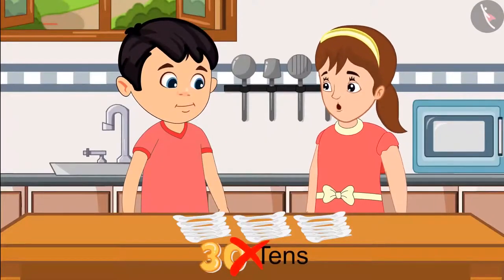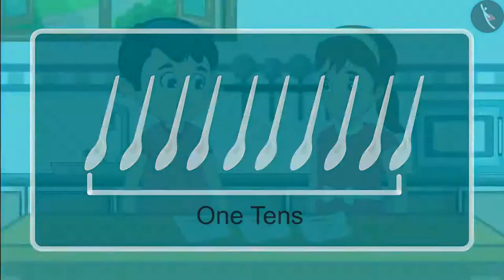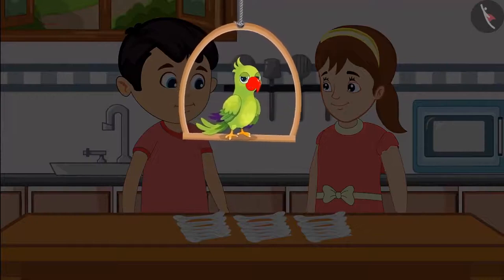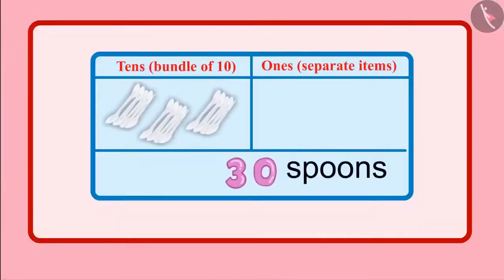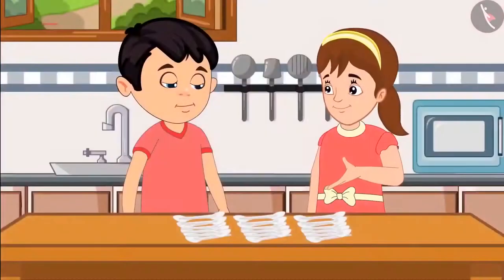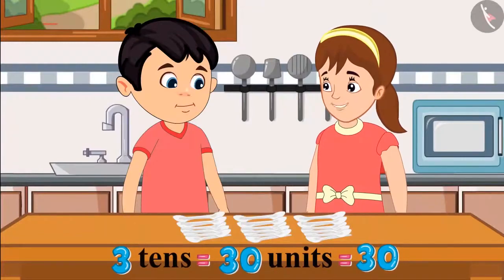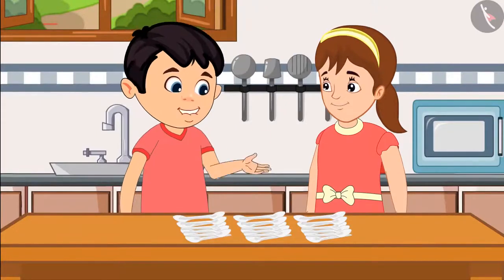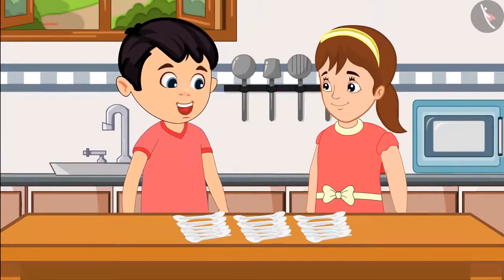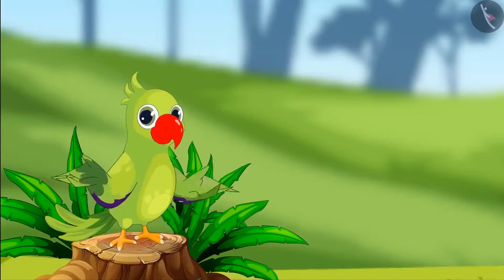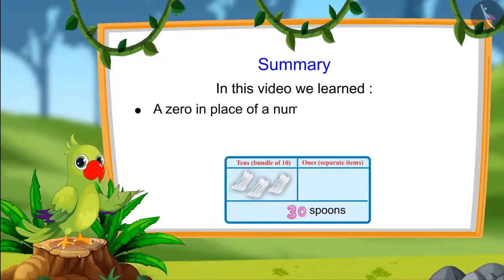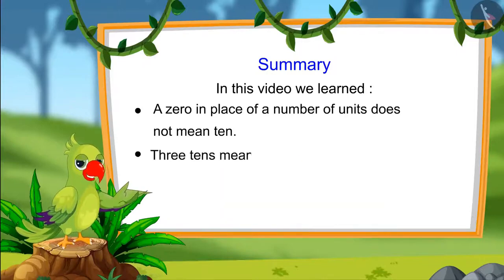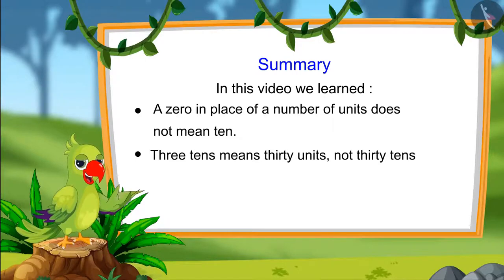Hey Chotu, you are counting it wrong. A group of 10 means one 10. Children, do you think Chotu has bought 30 sets of 10 spoons? Let's see. Chotu, these are just 30 spoons. 30 does not mean 30 tens, but 30 units. 30 tens would be too many spoons. Okay, now I have understood. You are right, Aarti. So children, in this video we learned that 0 does not mean 10 at the end of a number, and 3 tens means 30 units, not 30 tens.